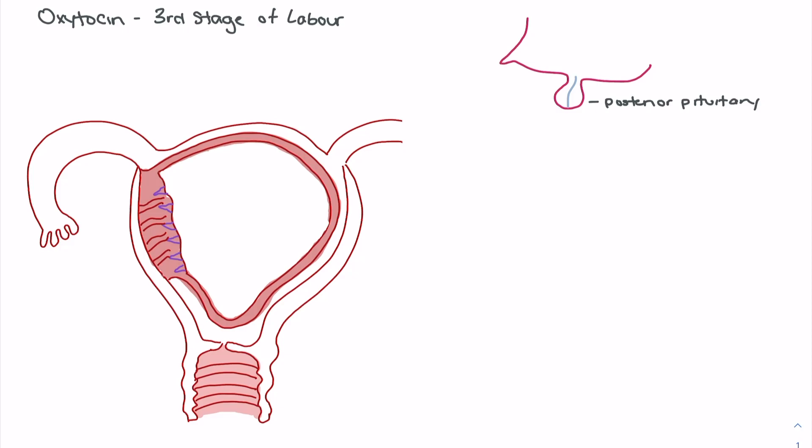In this video we're going to look at the mechanism of action of oxytocin, specifically investigating oxytocin use in the third stage of labor. This is oxytocin being delivered in order to reduce the risk of postpartum hemorrhage and to reduce the need for additional uterotonics during that third stage of labor. It is suggested as an IM dose of 10 units of oxytocin.